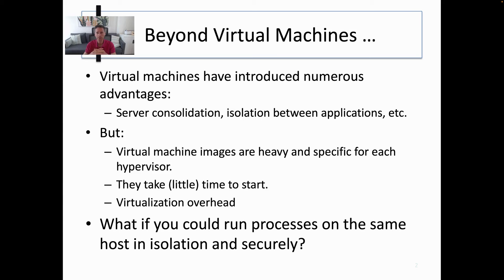Virtual machines have introduced several advantages in the past, such as server consolidation or the ability to run multiple virtual machines on top of a single hardware in order to increase hardware utilization. By using a hypervisor, this introduces isolation between applications, so that one application in one virtual machine cannot see what another application in another virtual machine is doing, because the hypervisor provides the isolation layer. But these virtual machines are run from virtual machine images, which are typically heavy because they include the whole operating system. And also they take some time to start because the whole operating system needs to boot up. Even modern Linux operating systems such as Ubuntu provide the ability to boot a machine in tens of seconds, but still there is a virtualization overhead that is imposed.